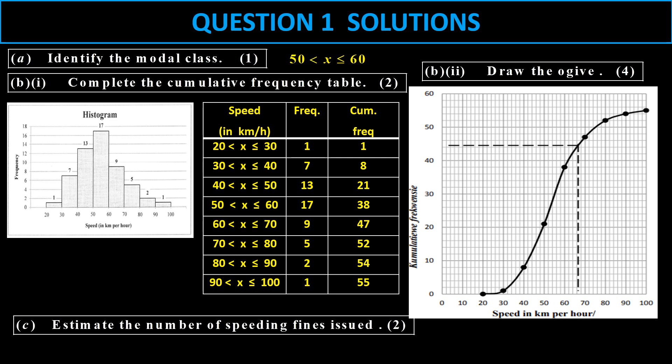Next one, you want to estimate the number of speeding fines issued when they exceed 66 kilometers per hour. And from 66, we draw the dotted line, go across there. And then we take the reading, the reading is 44. So there were 55 there. So it's 55 minus 44. So that gives us approximately 11 fines.